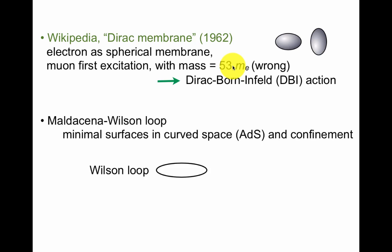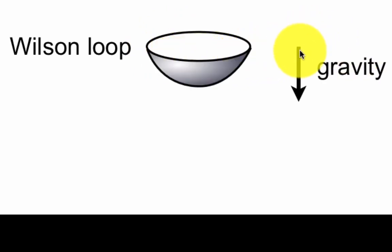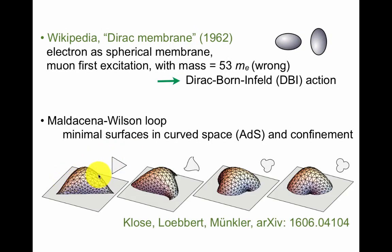Another way to think about minimal surfaces in string theory is the Maldacena-Wilson loop. This has to do with the Wilson loop that you might remember from quantum field theory — if not, you can look it up. Imagine putting this in a gravitational field, so you have a surface that can be formed with this boundary condition, but there's gravity pulling it down, so the surface will look something like this. Depending on the metric in this curved space, you will get different shapes. For a more interesting perimeter than this circle, you might get something like this. With a triangle, you get this minimal surface, which is upside down — this is hard to draw when it hangs down. You can change the perimeter, and there's a nice paper about this if you're interested.